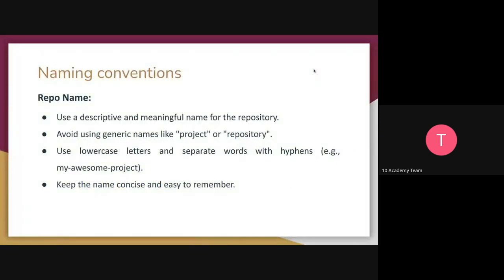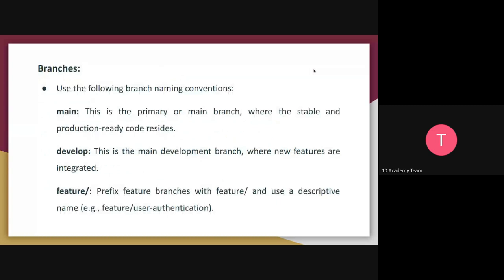We start from naming convention. Regarding the repo, use descriptive names — your repo name should be readable for someone who's checking it out. Avoid using generic names like 'project repo'. Just make it related to your project concept. Use lowercase, separate words — these are best practices. Be concise and make them easy to remember. Give thought to how you name your modules and folders.